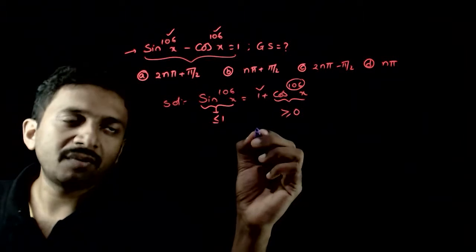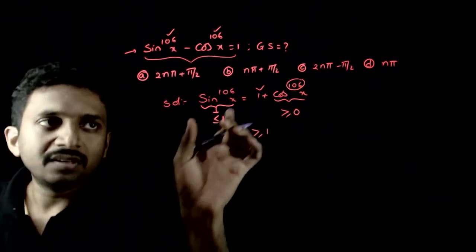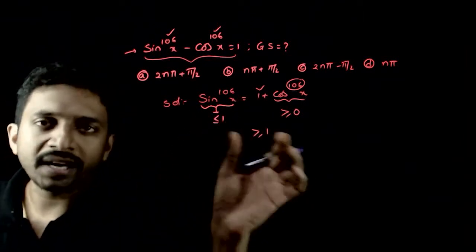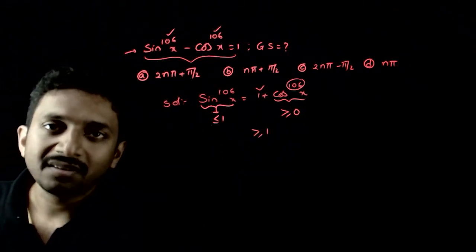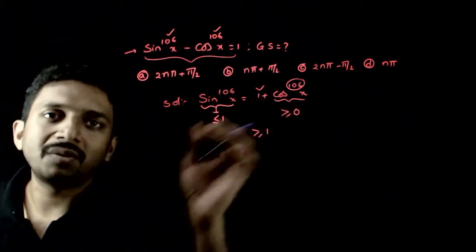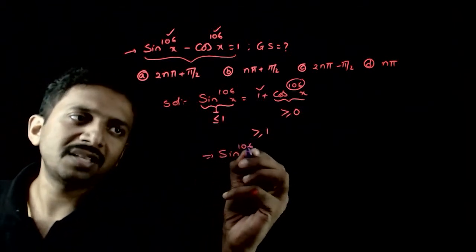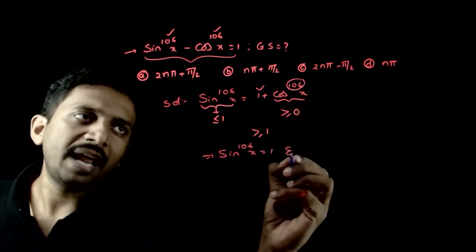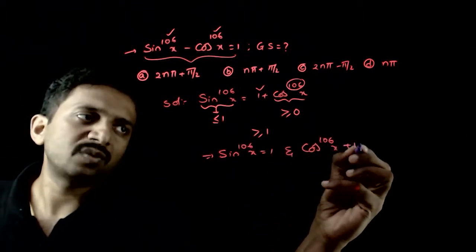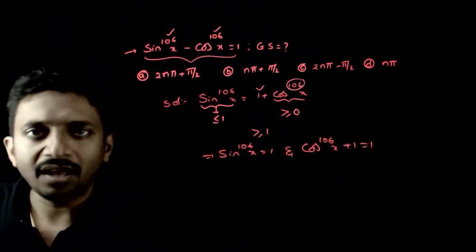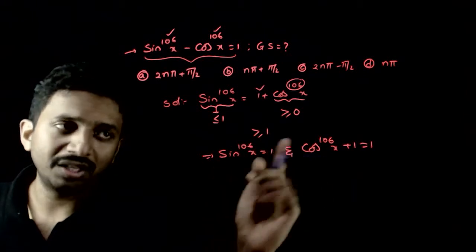So, 1 plus something greater than or equal to 0 gives RHS greater than or equal to 1. LHS is less than or equal to 1, RHS is greater than or equal to 1 — so when can they be equal? They can only be equal when both sides equal exactly 1. So, sin power 106x must equal 1 AND cos power 106x must equal 0, only then will this equation be satisfied.